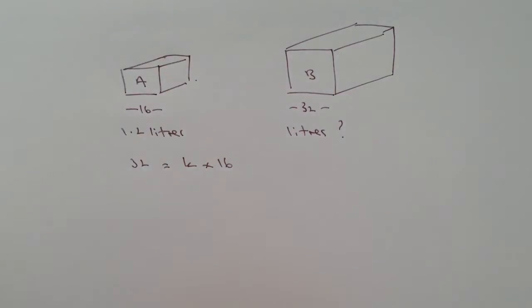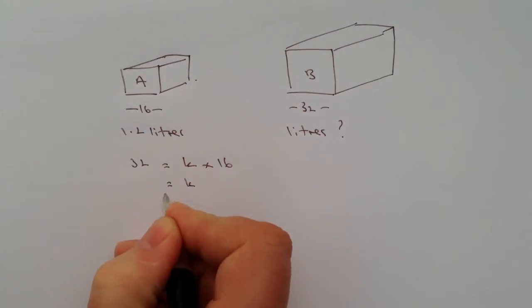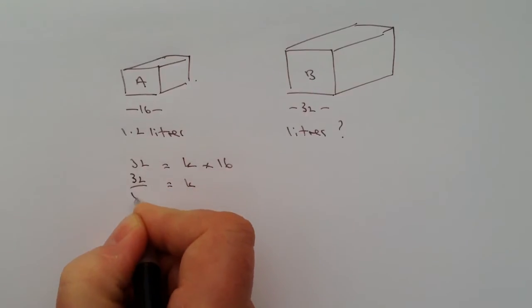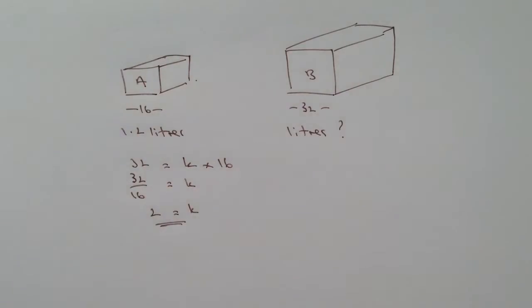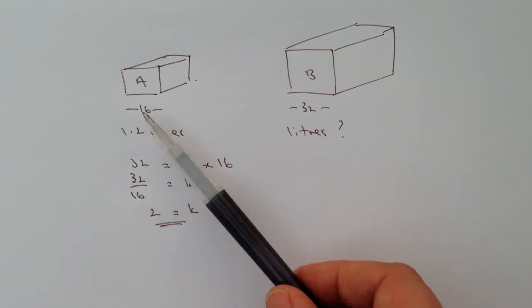So therefore mathematically we would write that as K equals 32 over 16 so therefore K equals 2. So in other words the linear relationship between the two boxes is 2, that's the value of K linearly.